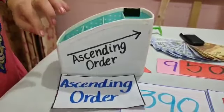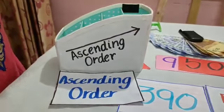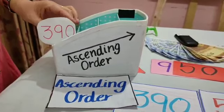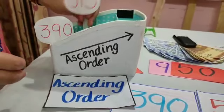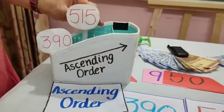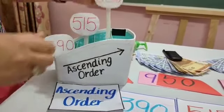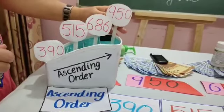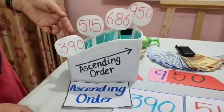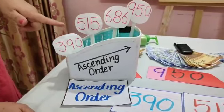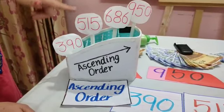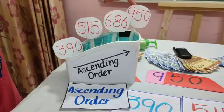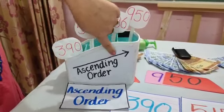Now we will arrange the value tags in ascending order. First we will take the lowest price, then higher than it — that's the shake's price, and then higher than it — that's the medicine's price, and at last the highest price — that's the mobile phone's price. Now speak with me: first take the lowest price, then comes higher, higher. This series, children, is called ascending order.